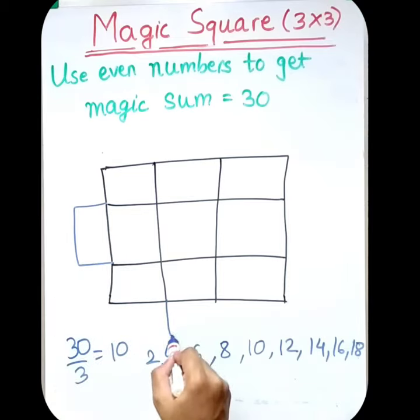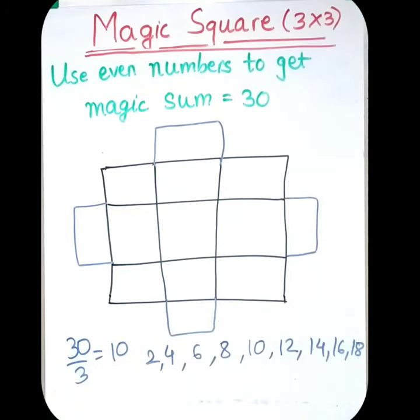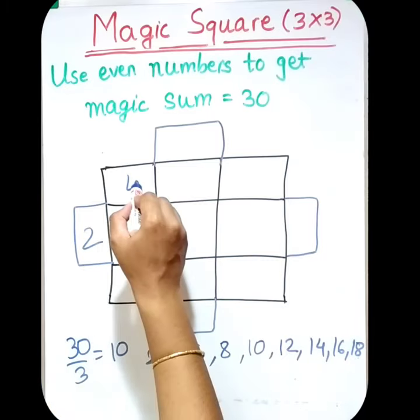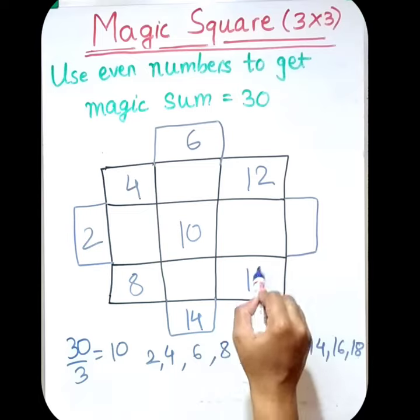So first exchange the middle rows and columns. Middle row and column. Now start writing diagonally: 2, 4, 6, 8, 10, 12, 14, 16, 18.